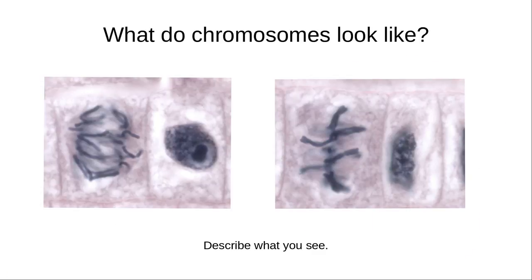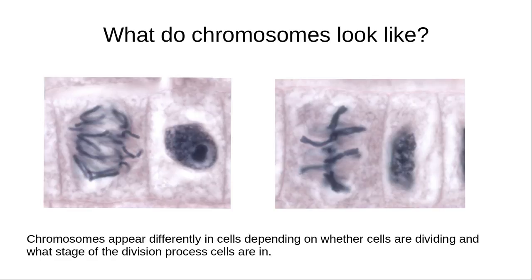What do chromosomes look like? These images are of prepared slides of onion root cells. Most cells and their structures are transparent under the microscope. Biologists use different stains to visualize different parts of cells — the different dyes have an affinity for specific components of the cell. For these images, the DNA shows up as a dark bluish purple color. Part of the reason the DNA looks different in each cell is that chromosome structure changes depending on whether or not the cell is dividing, and chromosomes also look different during the process of cell division.